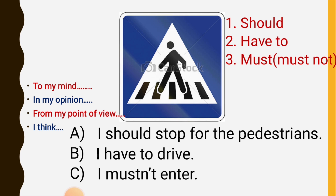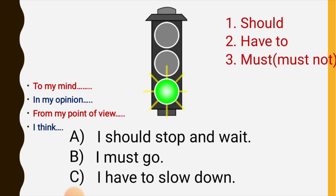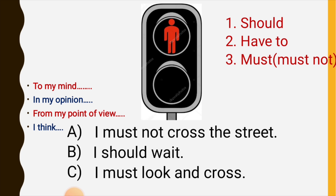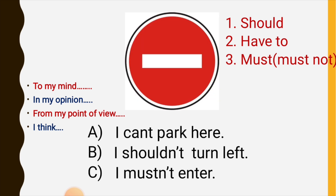A — I should stop for the pedestrians. B — I must go. A — I must not cross the street.